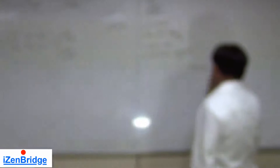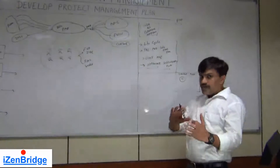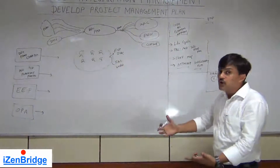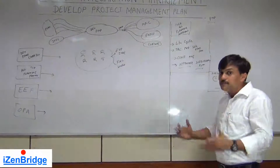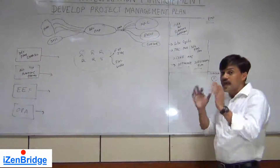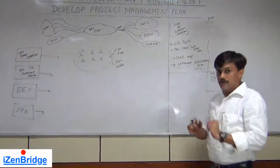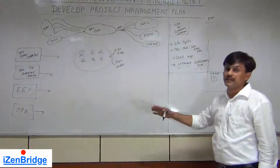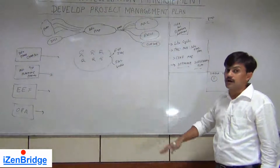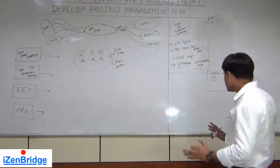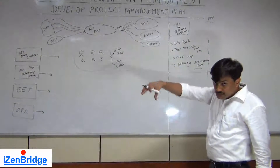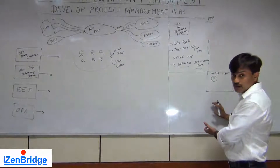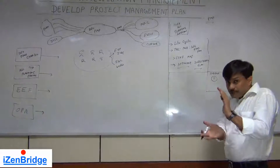The second section consists of subsidiary plans. We have 11 subsidiary plans in total across 10 knowledge areas. Every knowledge area has a plan: schedule management plan, cost management plan, quality management plan, scope management plan, and so on. Scope has an additional requirements management plan, and quality has a process improvement plan, making 11 subsidiary plans in total, which get integrated into the project management plan.